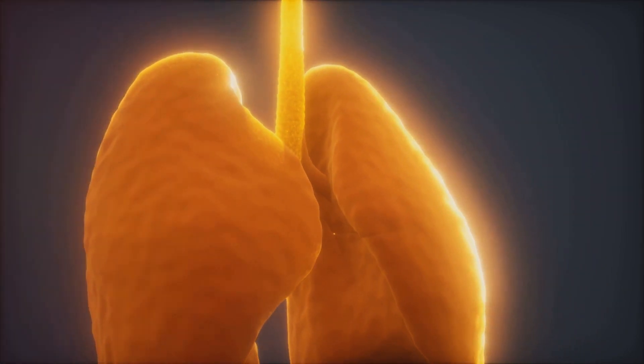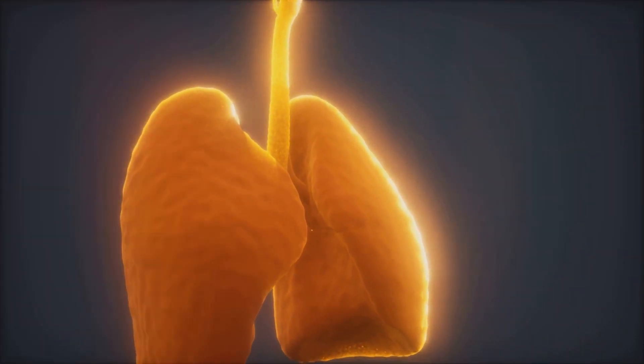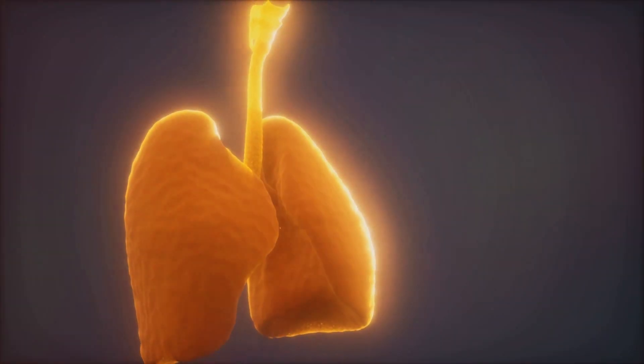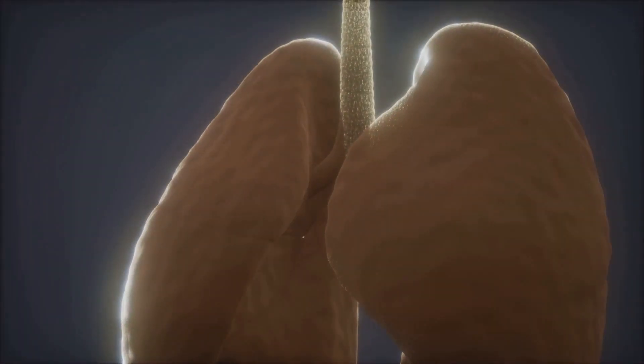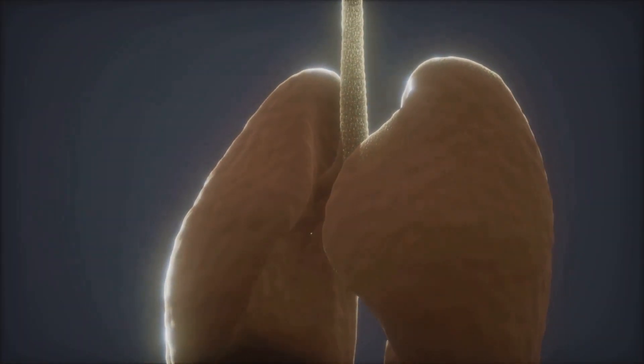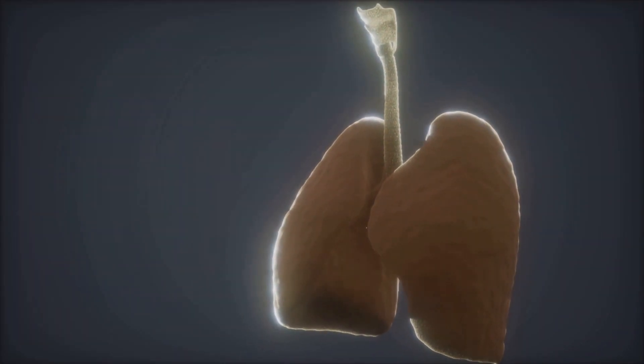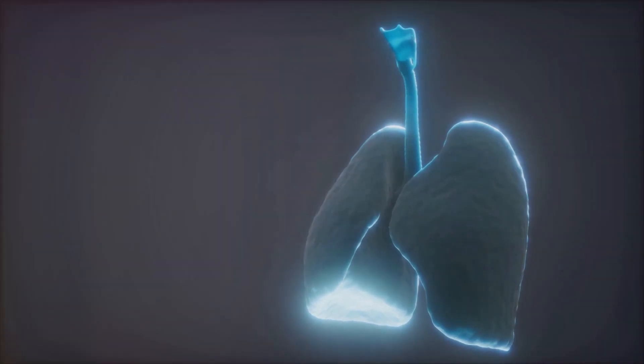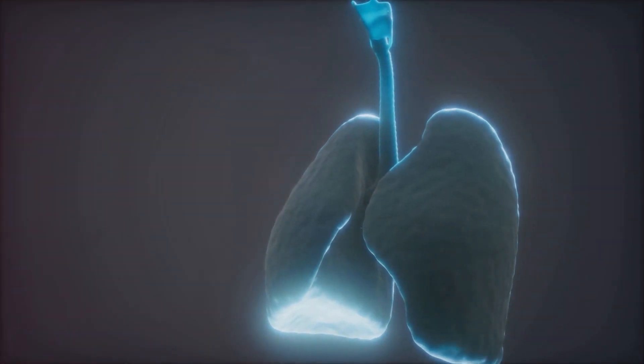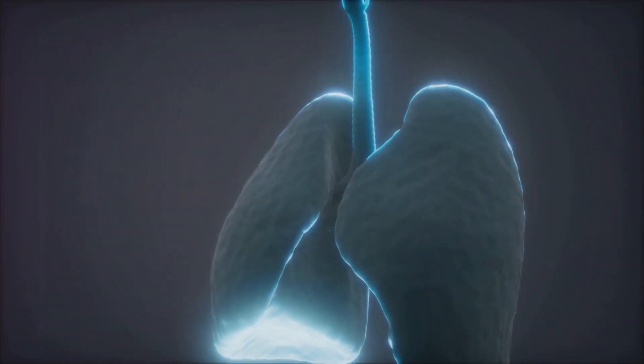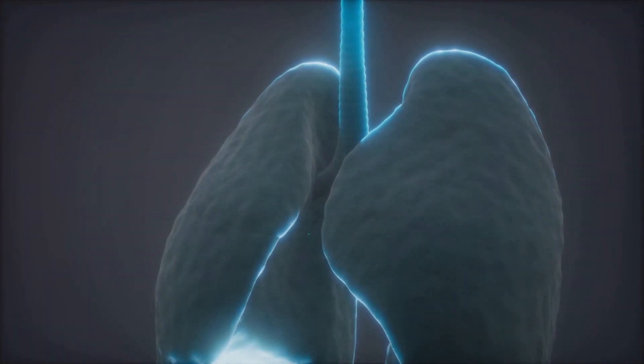Now what happens when this gene goes awry? The CFTR protein it codes for, which is found on the surface of many organs malfunctions. Instead of helping chloride ions move in and out of cells, which helps regulate salt and water balance in the body, it creates a bottleneck. This leads to a buildup of thick, sticky mucus in the body's tubes and passageways, particularly in the lungs and pancreas.